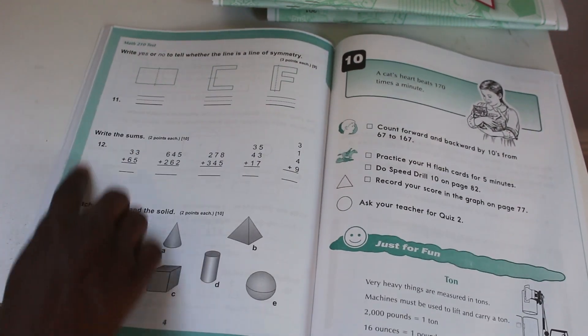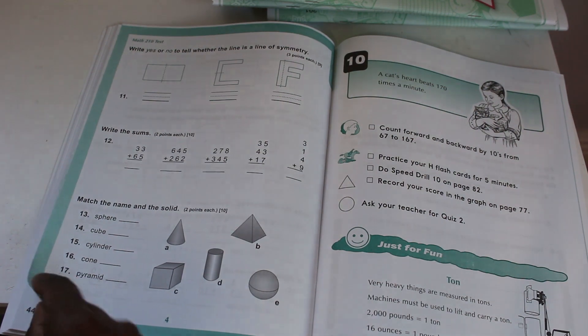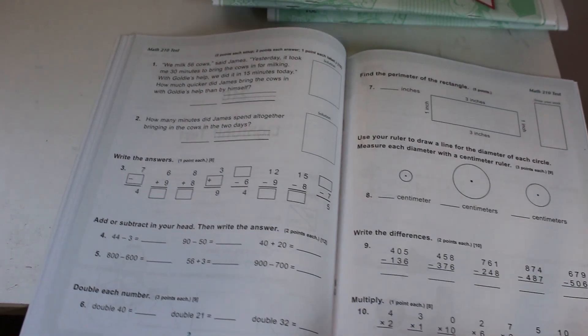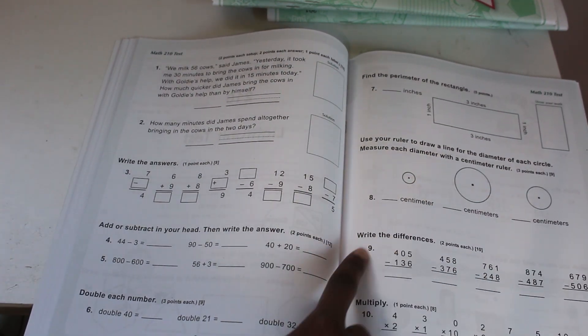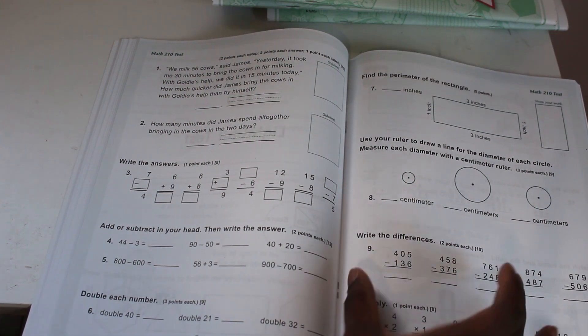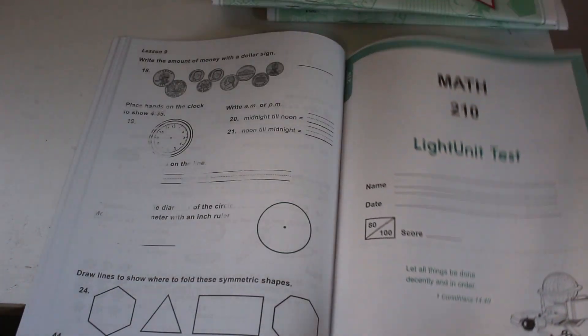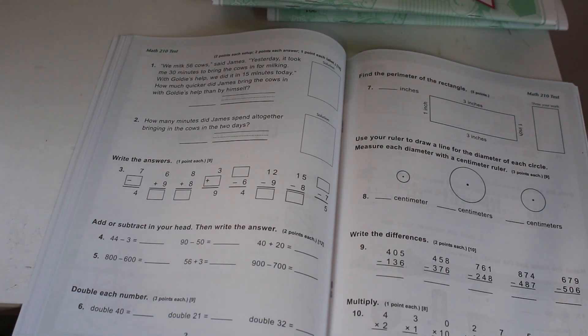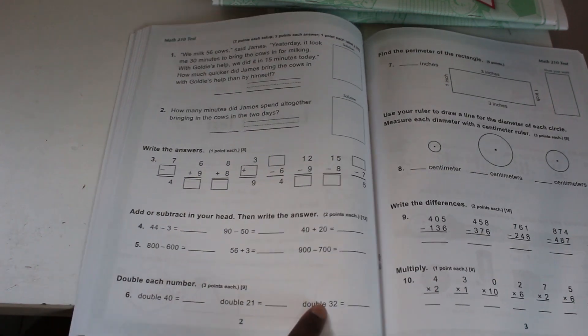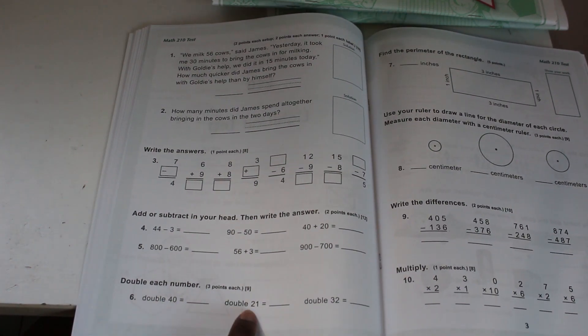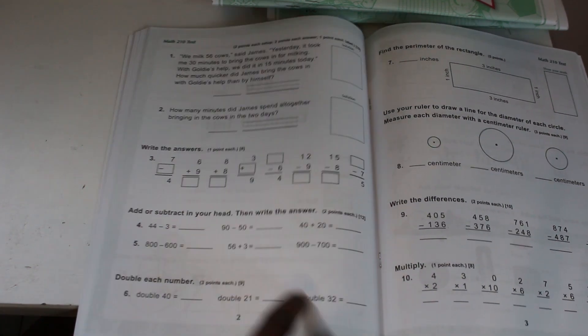So if you look at the test, that gives you a really good idea of what the child should know by the end of the course. We're talking about perimeter, diameter, centimeters, subtraction, multiplication, doubles, double 40, double 21, double 32.